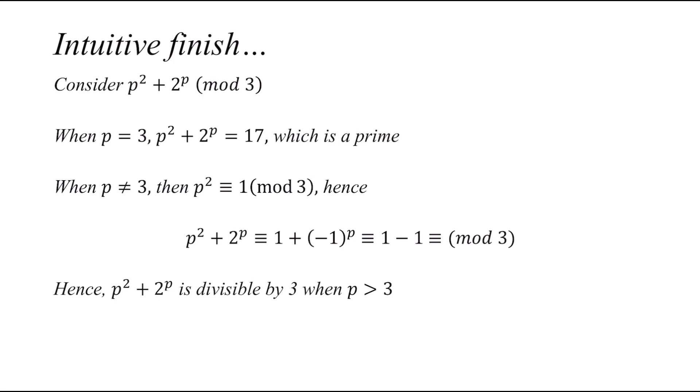Therefore, p squared plus 2 to the power of p is divisible by 3 whenever p is larger than 3. And therefore, the only solutions are (3,2) and (2,3), which concludes our proof.